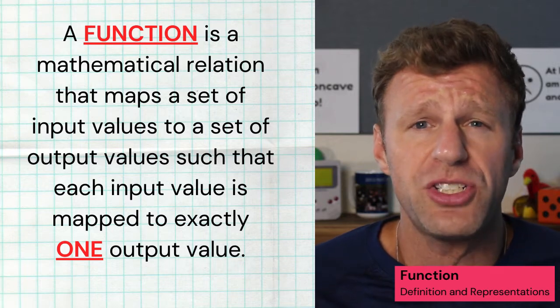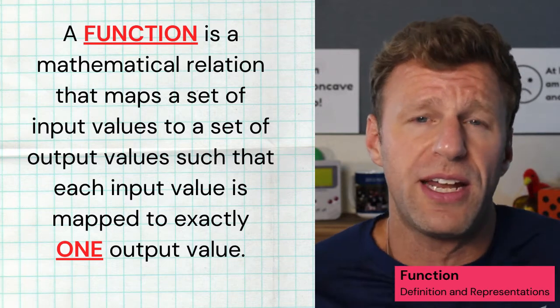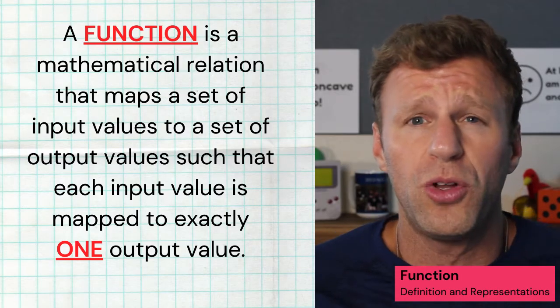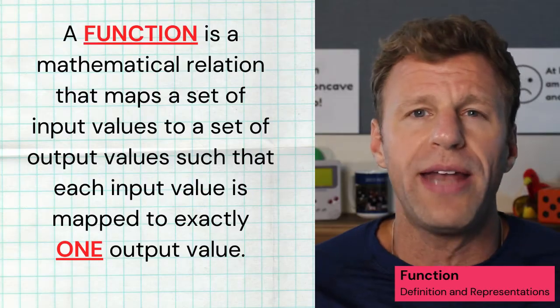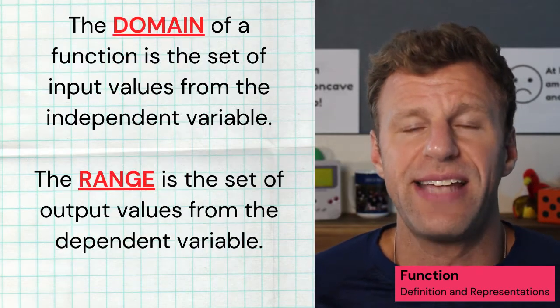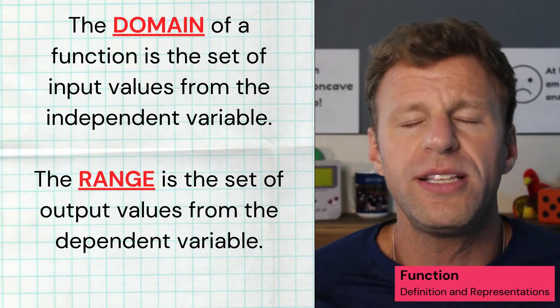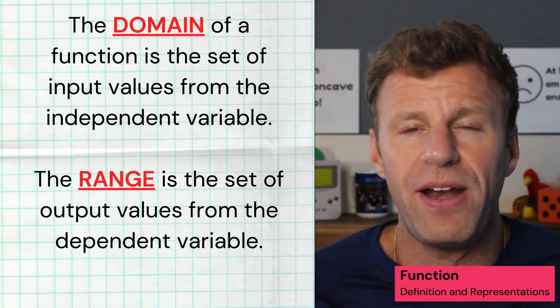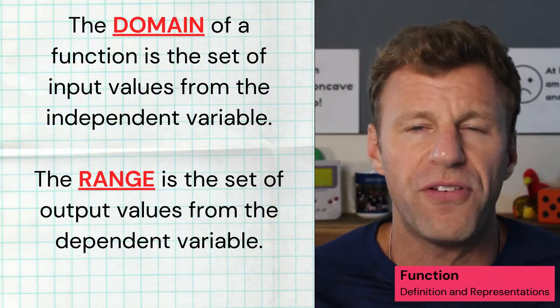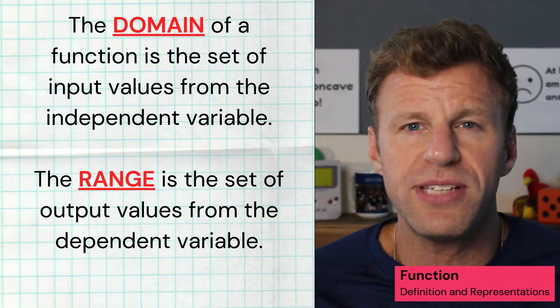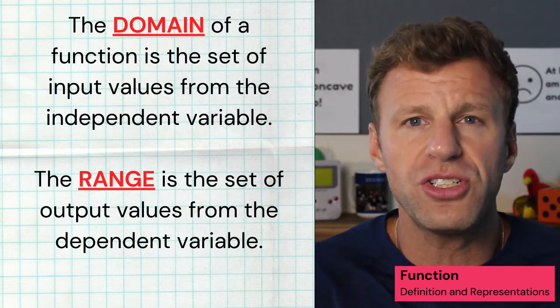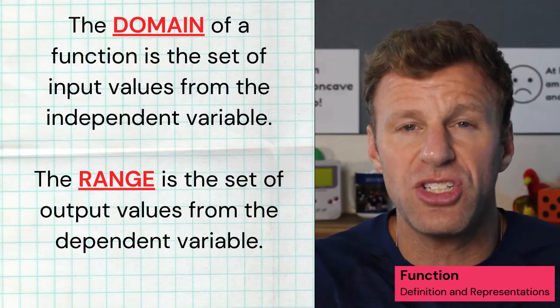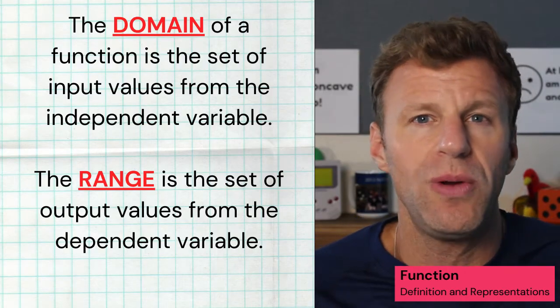First, we can't talk about how functions change without first talking about what a function is. Hopefully you remember from earlier classes, but a function is a mathematical relation that maps a set of input values to a set of output values, and the only important rule is that every single input value can have one and only one output value. Now the domain is the set of all input values, which are the independent variable — typically that's going to be X. The range is the set of all output values for the dependent variable, and that's typically going to be Y, which in this course we're going to actually call F of X. F of X and Y are the same thing. Inputs X, outputs F of X. The function is a rule that tells us how that X gets mapped to that new F of X value.